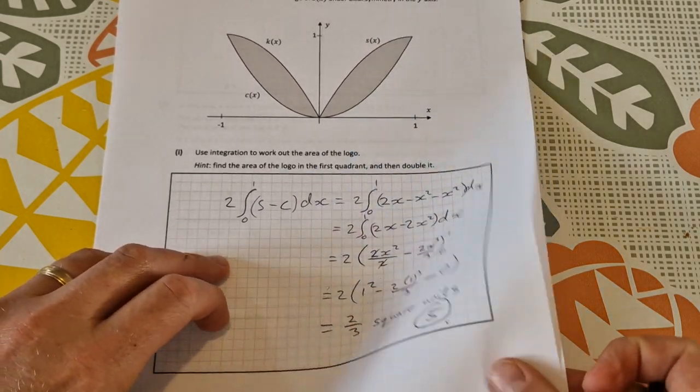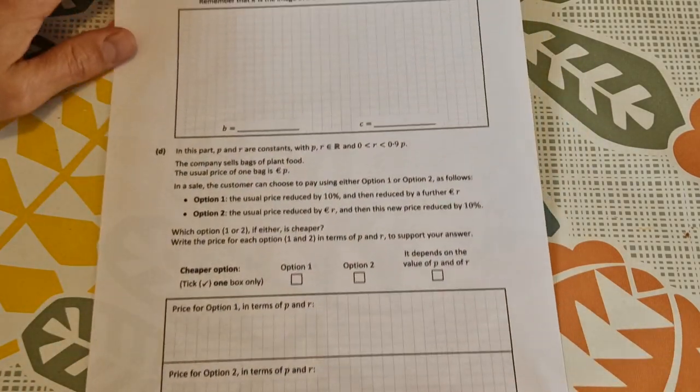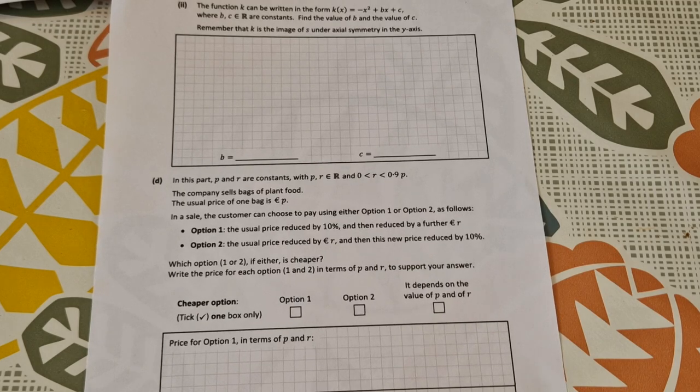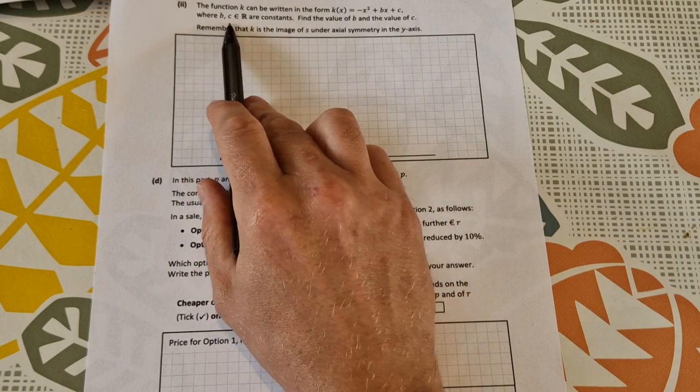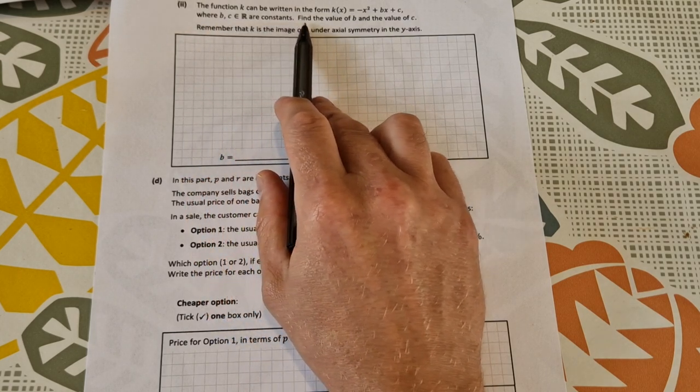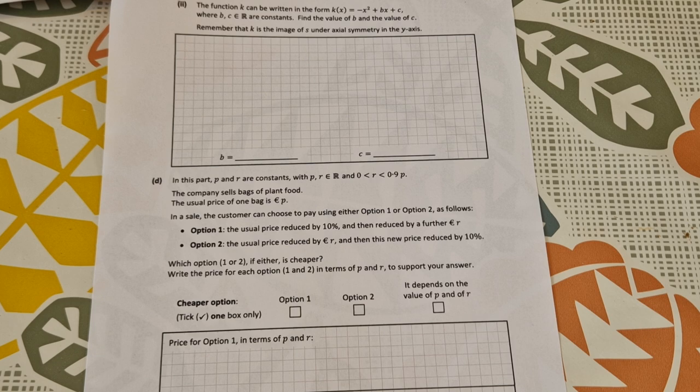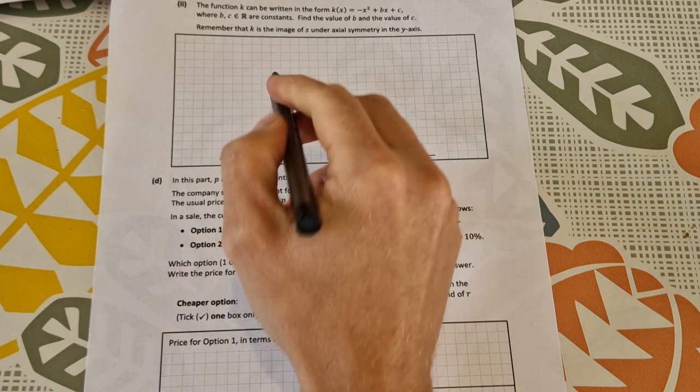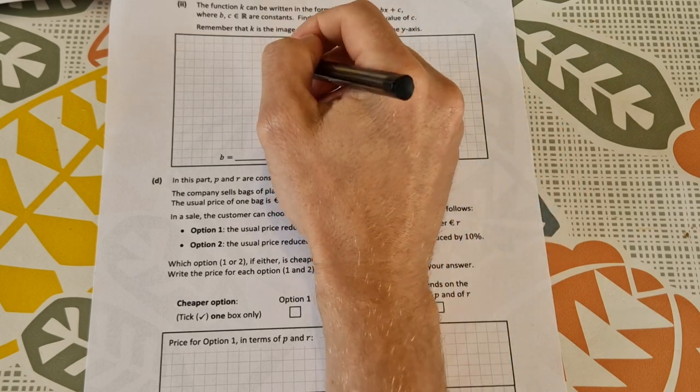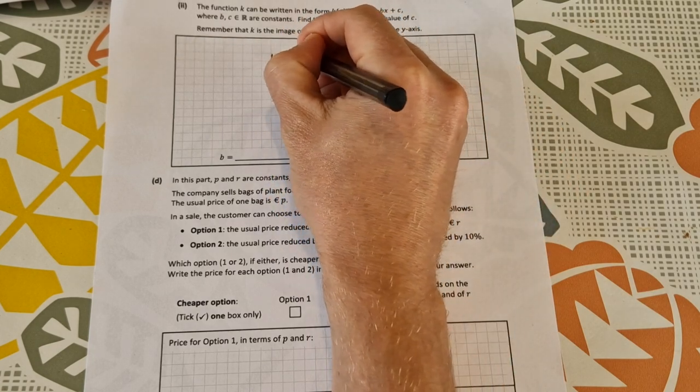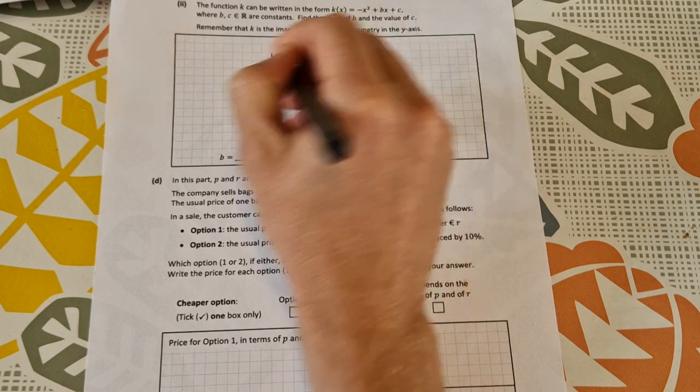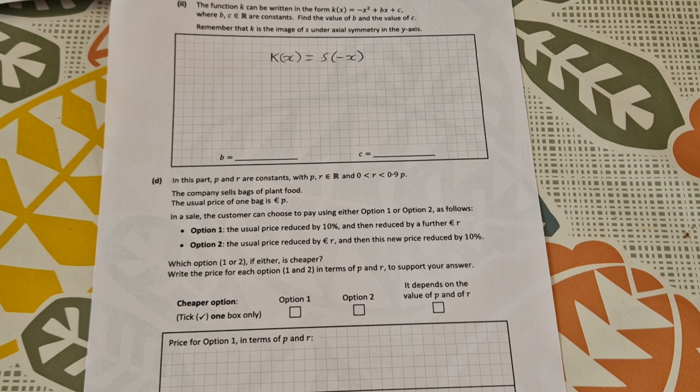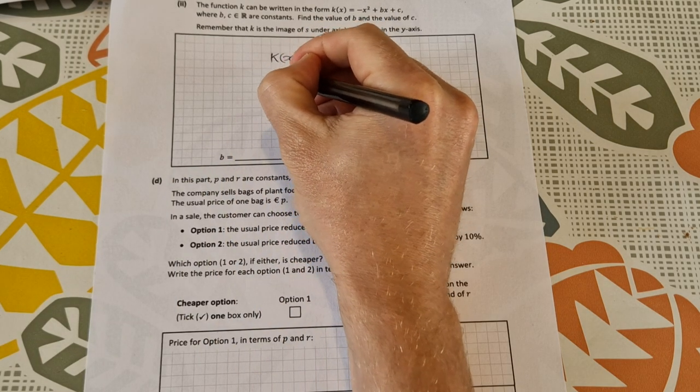And then on to the last bit of the last question of that paper. The function k can be written in the form k(x) equals x squared plus bx plus c, where b and c are constants. Find the value of b and the value of c. Remember that k is the image of s under axial symmetry, so k is the image of s. That means k(x) equals s(-x), that's what it means to be in axial symmetry.